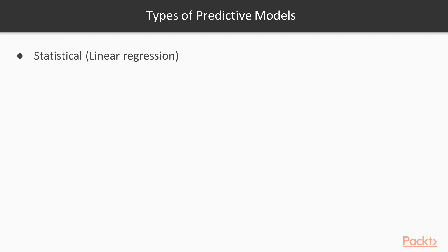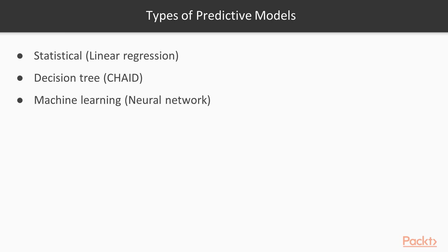In terms of the different types of predictive models available, there are three main classes: statistical models — with linear regression as our example — decision tree models — where we'll use CHAID as our example — and machine learning models, where we'll use a neural net model. In the next few videos, we'll talk about each type, covering its benefits and limitations.